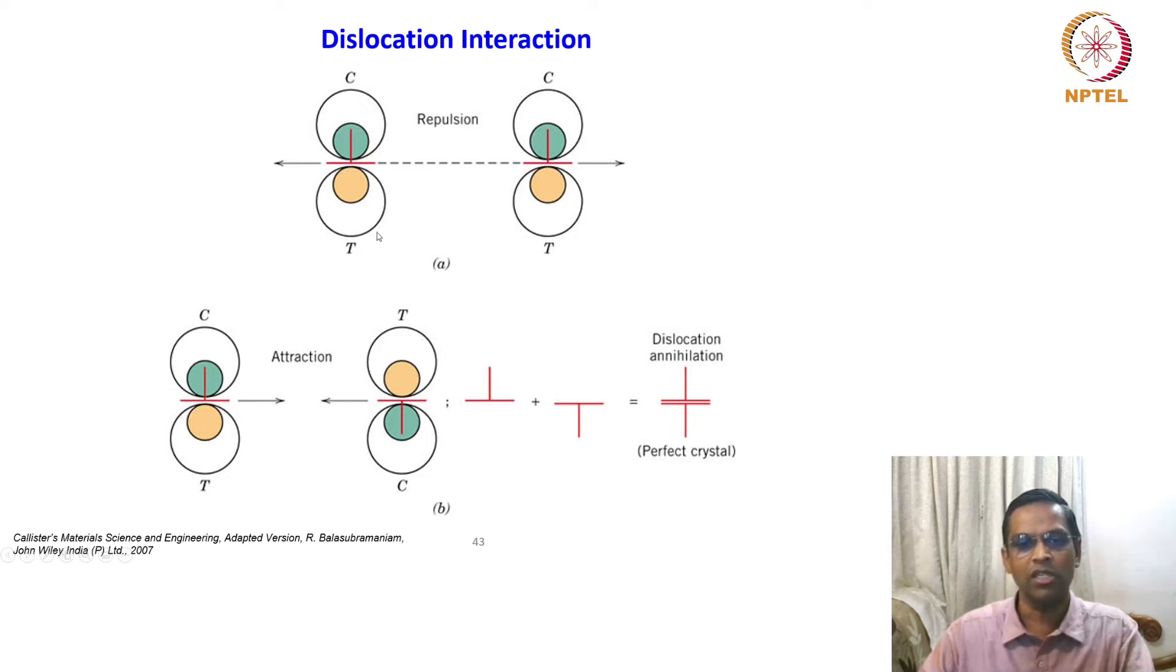This is one nice schematic which shows that dislocations of the same sign repel each other. These contours nicely convey the kind of stress fields around this dislocation - this is compression, this is tension. The two dislocations of opposite sign get attracted, and what you really get is a perfect crystal. This is called dislocation annihilation. Very frequently we will use this term when we involve dislocation dynamics as a consequence of either deformation or treatment or any processing conditions.